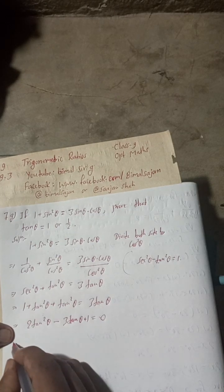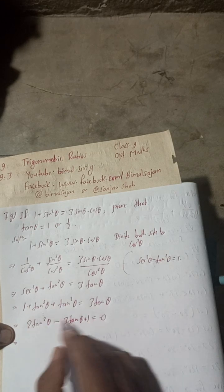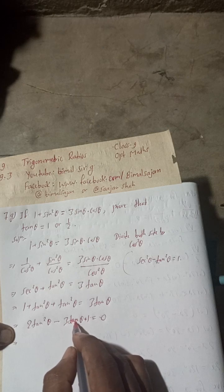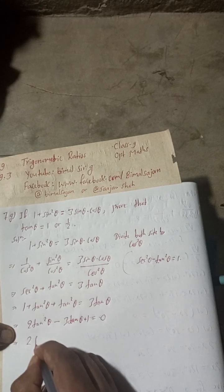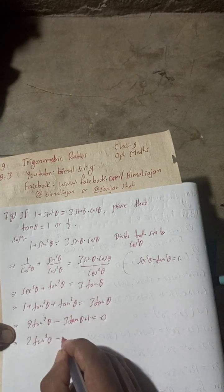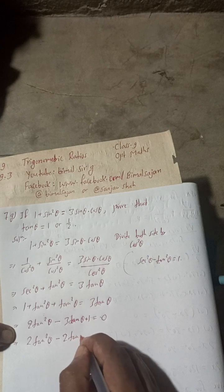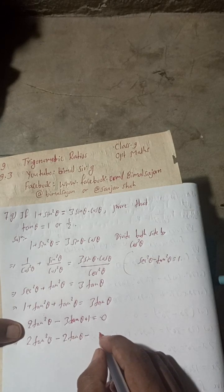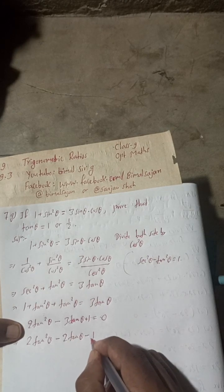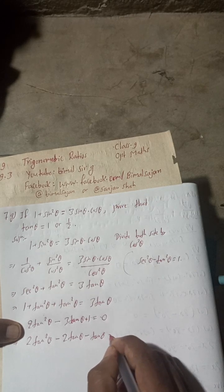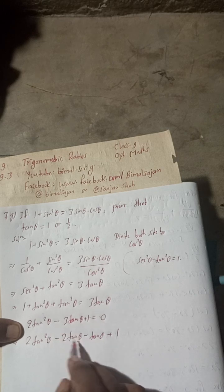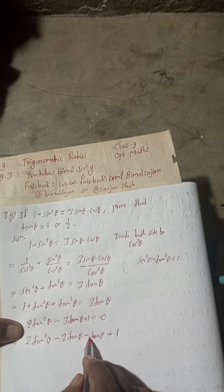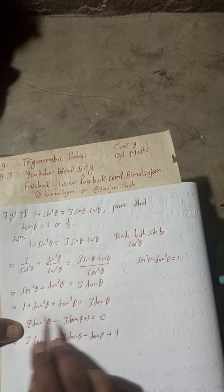Now we apply the first-into-last method to factor this. Two times one equals two. We need to split the middle term, negative three, such that the two parts add to negative three and multiply to two. So we split as: 2tan²θ minus 2tanθ minus tanθ plus one. When we add: minus two plus minus one gives minus three; when we multiply: minus two times minus one gives two. That checks out.